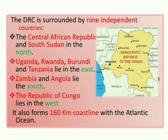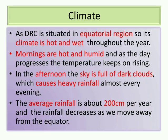It also forms a 60 km coastline with the Atlantic Ocean. Since the Democratic Republic of Congo is situated in the equatorial region, its climate is hot and wet throughout the year. The country experiences hot and humid conditions all year round.